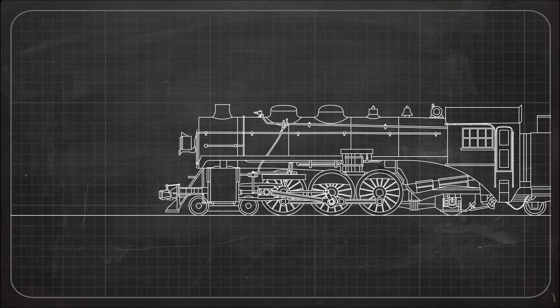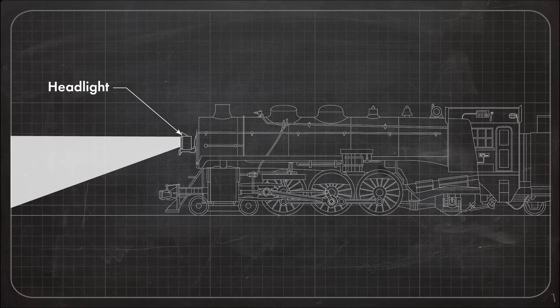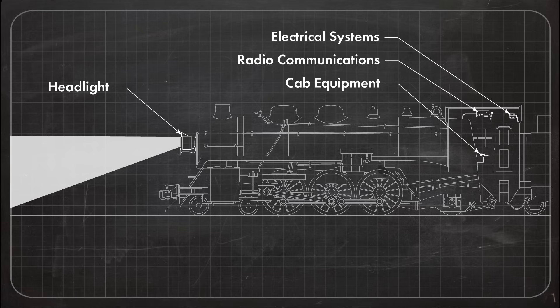They then connect to other parts of the locomotive, giving power to the headlights, cab equipment, radio communications, and other electrical systems.